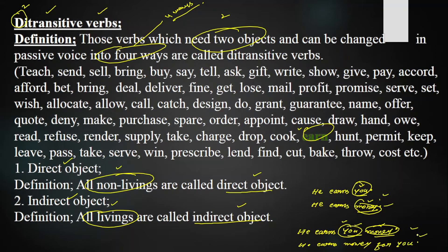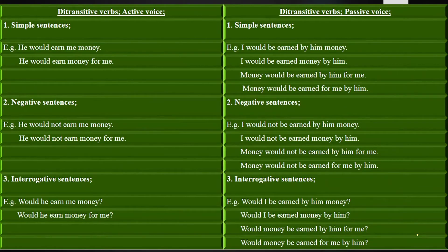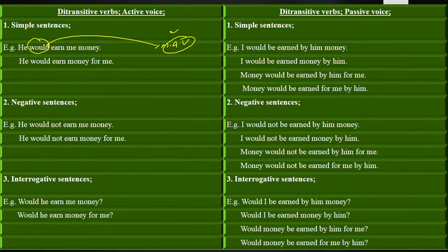Our main target is to change them into passive voice. Today we have the ditransitive verb 'earn' with the modal auxiliary verb 'would,' which is used for unreal situations in the past — we wanted to do it but we didn't or couldn't.